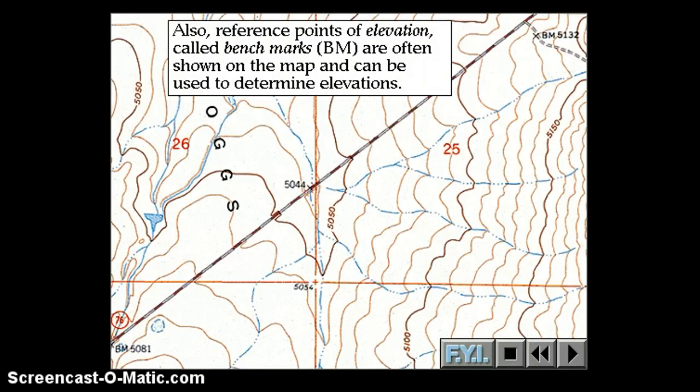Also, you can see reference points of elevation. Benchmarks, that's what BM stands for, often show you at this point right here, the elevation is exactly 5132. They're often located on the tops of peaks or at road intersections, sometimes along dams or rivers.